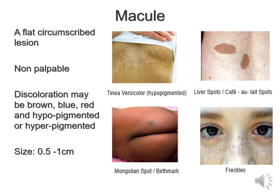A macule is a flat, circumscribed or circular lesion — typically so flat that it's not palpable. The discolouration can be variable: brown, blue, red, hypopigmented or hyperpigmented. The size is typically small, from about 0.5 to about 1cm. Examples include freckles, Mongolian spots seen in some Asian babies as birthmarks which typically fade over time, tinea versicolor which is hypopigmented, or liver spots also referred to as café au lait spots or birthmarks.